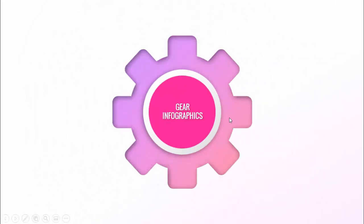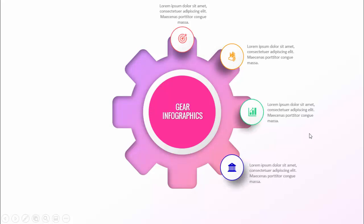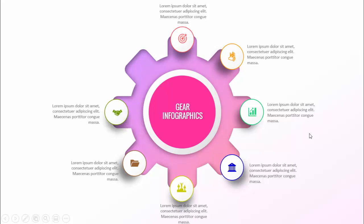In today's tutorial I am going to show you how to make an eight-gear options infographic slide in PowerPoint. When I click you can see it has a gear with eight teeth, and then the first option comes along with the icon and detailed text. You can replace your text with your own text, and then comes the second, third, fourth, fifth, sixth, seventh, and eighth option.